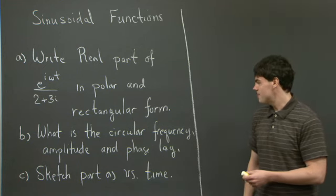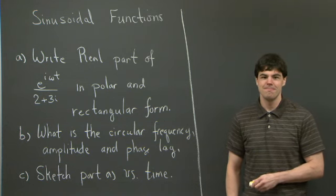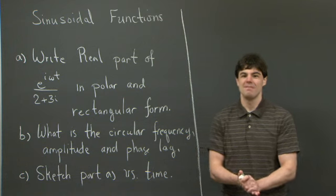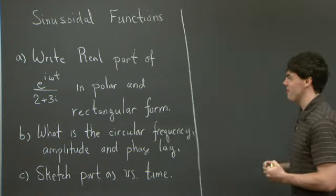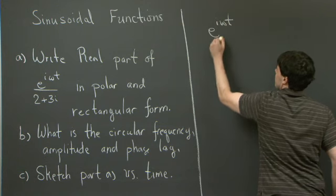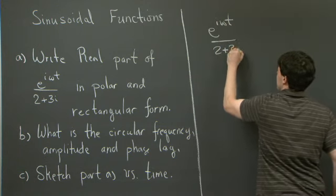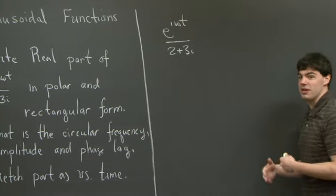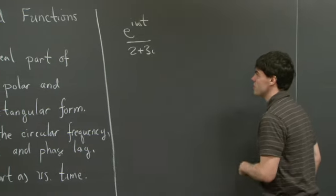Lastly, we're asked to sketch the real part of this function versus time. So let's take a look at this problem. We're asked to write the real part of e to the i omega t divided by 2 plus 3i using polar form and rectangular form. I'll start with polar form.